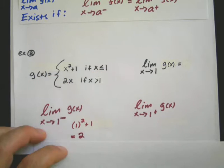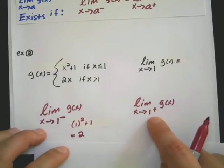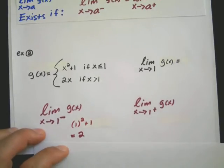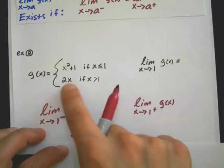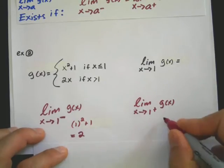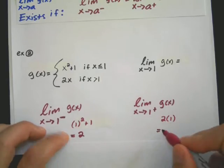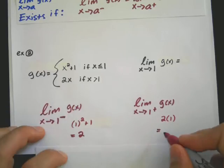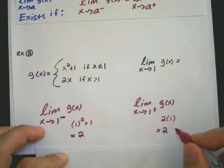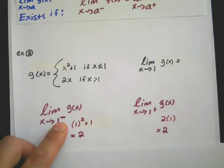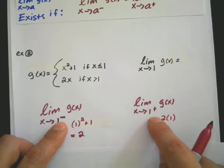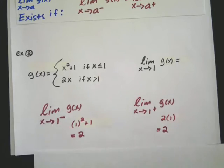Now, as I approach 1 from the right, that's the things greater than 1, that's to the right of 1. So that's going to be this definition, which is 2x. So if I just plug in 2 times 1, if I plug in 1 into this definition, I end up with this equal to 2. So the left side approach equals the right side approach, so I can say that my limit is equal to 2.